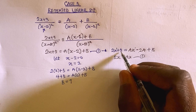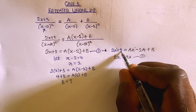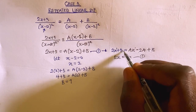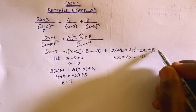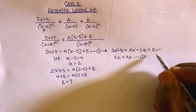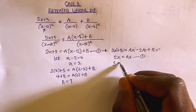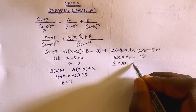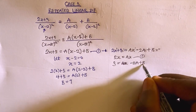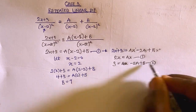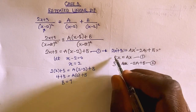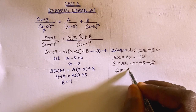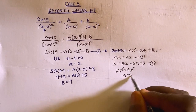We also form a constant equation. Since we have 3 on the left and minus 2A plus B on the right, comparing constants gives us 3 equals minus 2A plus B, which is equation 2. But from comparing coefficients of x, we simply have 2x equals Ax, so A equals 2.